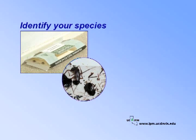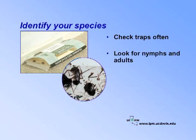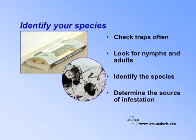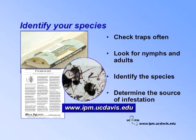Several cockroach species may invade schools, but at any single school you'll usually find only one or two species. Appropriate management practices vary with species, so it is important to make a correct identification. Check traps often and note how many roaches you are catching. Look for nymphs and adults. A lot of nymphs indicate that you have a growing or increasing infestation. Identify the species you have caught. You need the adults to make a correct identification, as nymphs are often hard to distinguish from one species to the next. If you know the species, you will be better able to determine where the source of infestation is and where to focus management efforts. Refer to the Pest Note on the UC IPM website for more information.